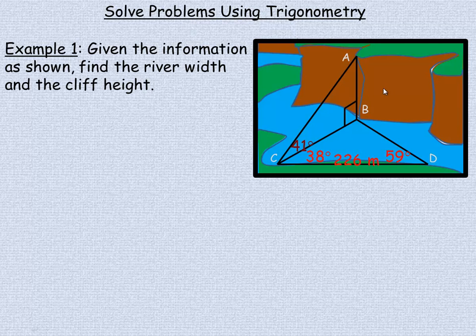In the first example, we have this diagram with a river flowing past a cliff. This is the kind of thing that a surveyor might do. If they wanted to find the distance across the river, the CB distance here, they could locate two points on the side of the river where they're on, measure the distance between them, and measure the angles.